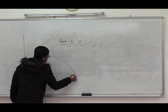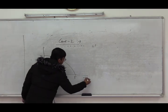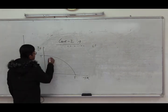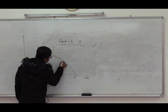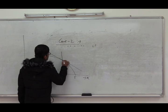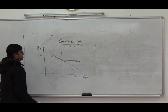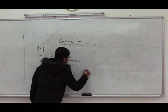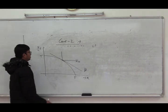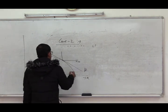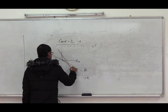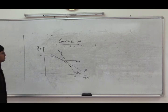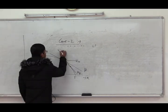Let TT be the standard production possibilities curve, and I0 is the community indifference curve. The slope of P indicates the autarkic price ratio. Now let us consider the country opens up and the international terms of trade is given by the slope of Pi.